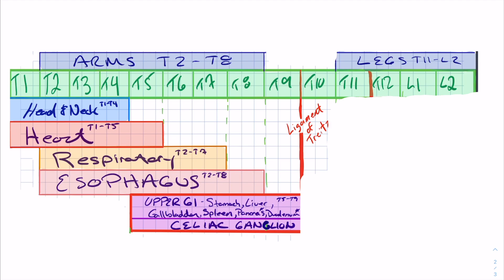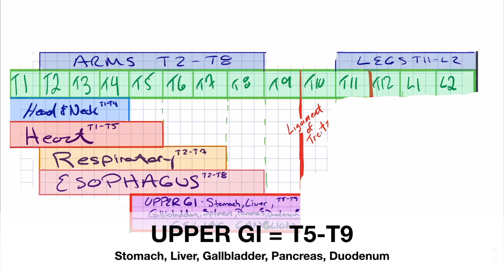The upper GI — stomach, liver, gallbladder, spleen, pancreas, duodenum — all of these will be T5 through T9, and all associated with the celiac ganglion. That's a ganglion that can be treated with osteopathic manipulation — you can do a ganglion release to facilitate or bring balance to the sympathetics coming through that portion. If you get a question about a liver issue, fatty liver, pancreatitis, gallbladder, cholecystitis, an ulcer or gastritis, and they ask which viscerosomatic reflex portion of the spine is involved, you know it's going to be between T5 and T9.